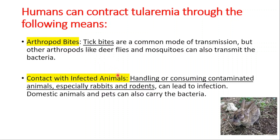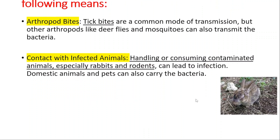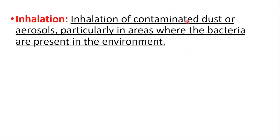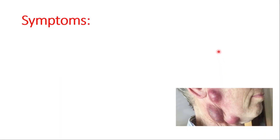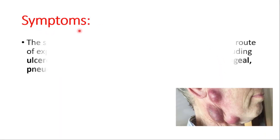Contact with infected animals — for example, handling or consuming contaminated animals, especially rabbits and rodents, can lead to infection. Domestic animals and pets can also carry the bacteria. Inhalation of contaminated dust or aerosols is another route, particularly in areas where the bacteria are present in the environment. Drinking water or eating food contaminated with the bacteria can also cause infection.